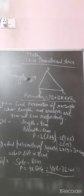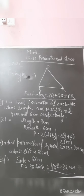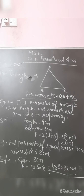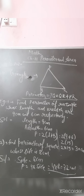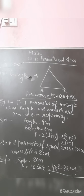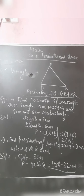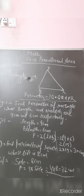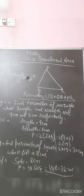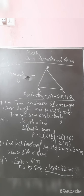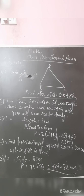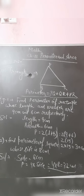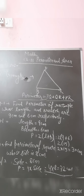Let me take examples — with the help of examples it will be more clear to you. First: find the perimeter of a rectangle whose length and breadth are 9 cm and 6 cm respectively. Length = 9 cm, breadth = 6 cm. Formula: perimeter = 2(l + b) = 2(9 + 6) = 2 × 15 = 30 cm. So 30 cm is the perimeter of the rectangle.